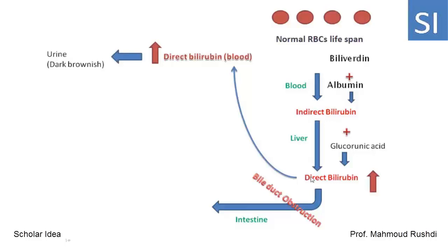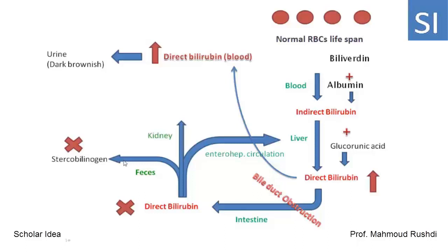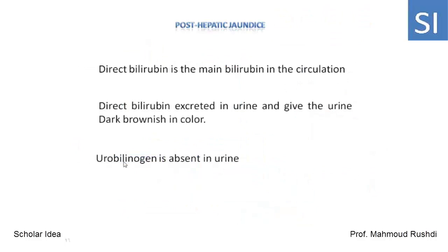The direct bilirubin is excreted in the urine, resulting in dark brown urine. Since no bile pigment reaches the intestine, there is no enterohepatic circulation, no urobilinogen excreted in urine, and no stercobilinogen formed — resulting in clay-colored feces. Post-hepatic jaundice is characterized by: direct bilirubin as the dominant bilirubin in the circulation; direct bilirubin excreted in urine giving it a dark brownish color; and urobilinogen absent from urine.